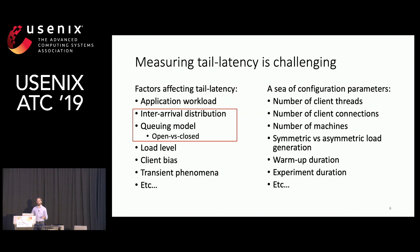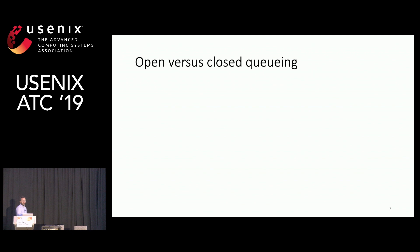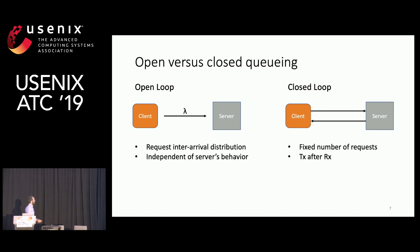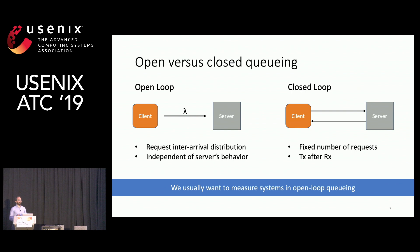As a reminder, there are two main ways a system can operate in terms of queuing: open-loop and closed-loop queuing. In open-loop queuing, clients generate requests to a server based on a specific inter-arrival distribution and rate, independently of how the server reacts. In closed-loop queuing, we have a fixed number of requests in the system, and clients only send the next request after receiving the reply from the previous one. We usually want to measure open-loop queuing latencies, because this is how most systems are deployed, and open-loop queuing only depends on the inter-arrival distribution to fully describe how the system operates, so it's hard to dispute the results.